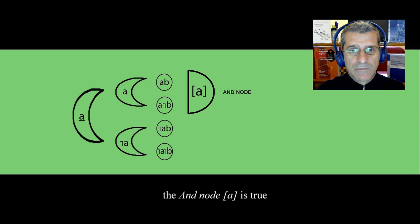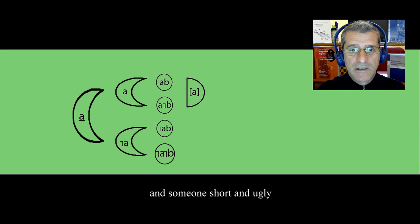When there is someone short and handsome and someone short and ugly, the AND node not A is true. When there are all kinds of people, AND supernode is true.